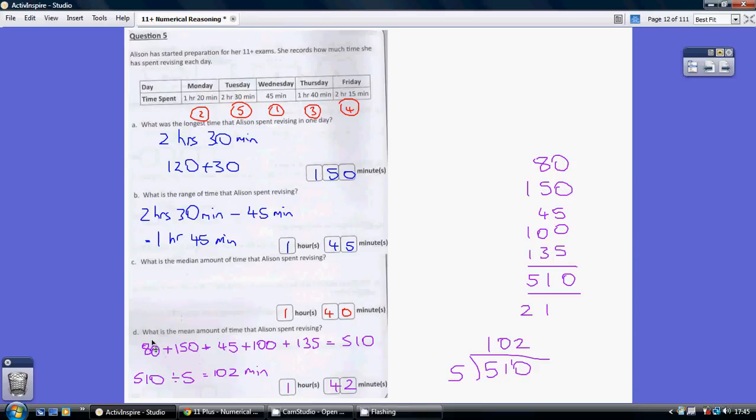So first of all I've started off by converting them all into minutes. 1 hour 20 minutes is 80 minutes, 2 hours 30 minutes is 150 minutes, obviously 45 minutes is 45 minutes, 1 hour 40 minutes is 100 minutes, and 2 hours 15 minutes is 135 minutes. So these five have to be added up together.